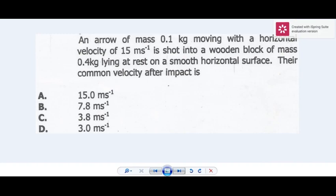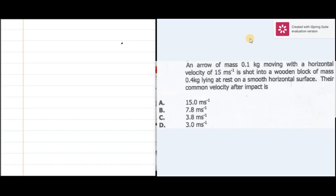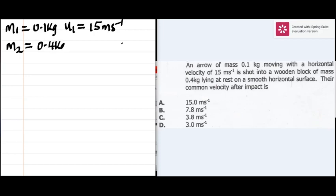The question is demanding us to find the common velocity. The mass of the arrow will be taken as m1, which is 0.1 kilogram, moving with a horizontal velocity, the initial velocity of the arrow u1, that is 15 meters per second. The block mass will be taken as m2, 0.4 kilogram. Since the wooden block is at rest, its initial velocity is zero.